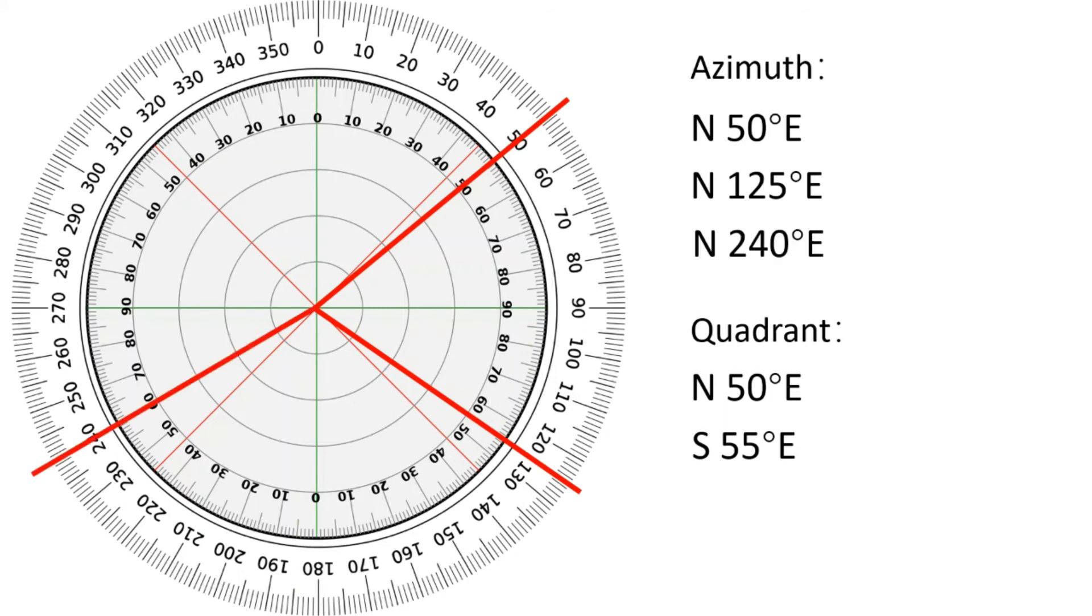What is the quadrant reading when azimuth reading is north 240 degrees east? It is south 60 degrees west.